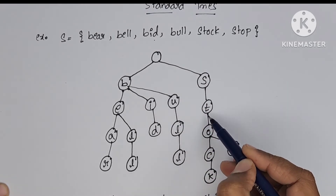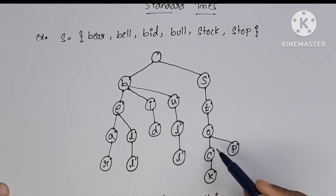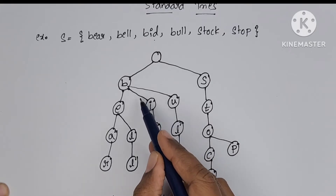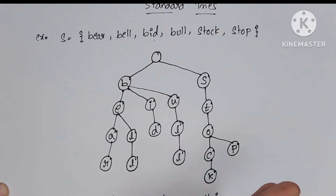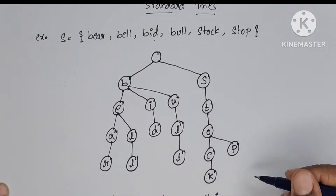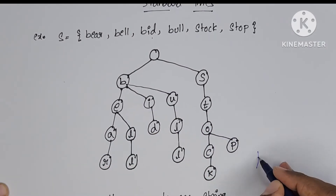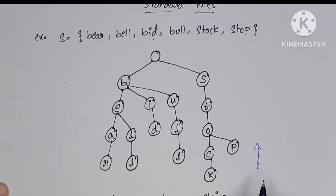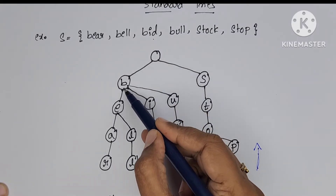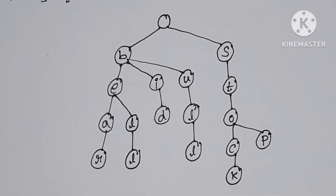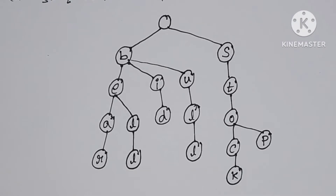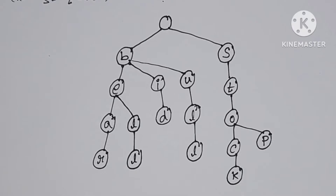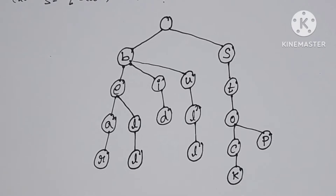It takes more time to search strings. For example, if you want to search 'stock', you have to traverse five levels, comparing S, T, O, C, K one by one. If it is possible to compress the trie and reduce the number of levels, it automatically takes less time to search your string.